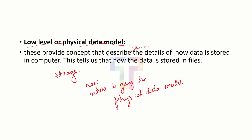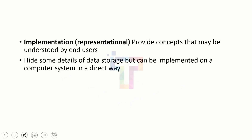All these storage details will be explained by the physical data model. So physical is related to storage of your database. The user doesn't need any extra knowledge about this — it is the work of the database to handle how data is stored. Next we have implementation or representational data model. It provides concepts that may be understood by the end user. This data model sits between the high level and low level.